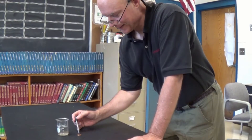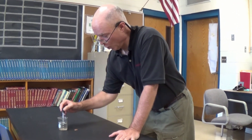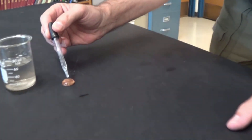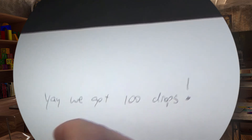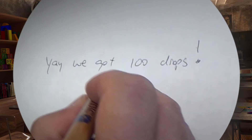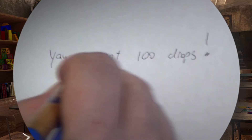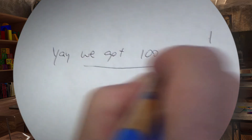Okay kids, it's time to grow up. You're on your way to high school where you really have to explain yourself when you write a science conclusion. This is you in elementary school — you've just done a lab on how many drops you can add to the top of a penny. Your team awesomely gets 100 drops, so for your conclusion you write: yay, we got 100 drops!